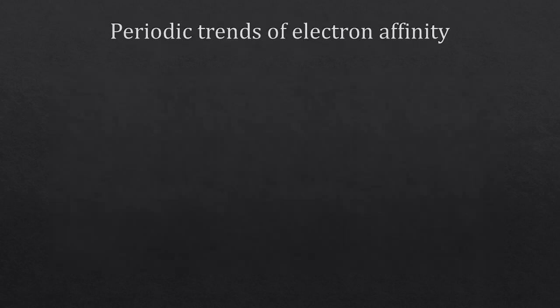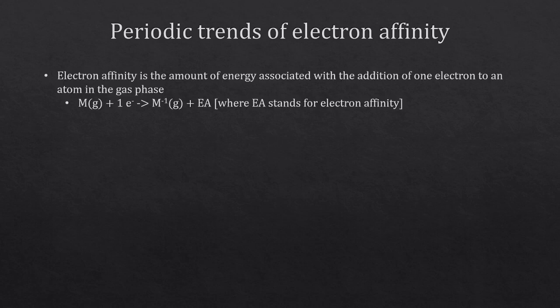Let's talk about electron affinity. Electron affinity is the amount of energy associated with the addition of one electron to an atom in the gas phase. Any atom X in the gas phase gains an electron to become a negative-one ion, and in doing so releases some energy — that's the electron affinity energy. The more energy released, the larger the electron affinity, and by 'larger' we mean it becomes more negative.